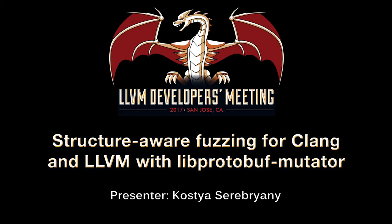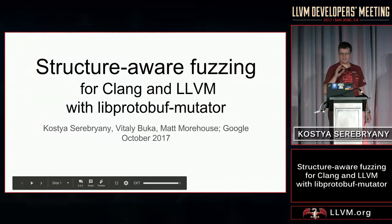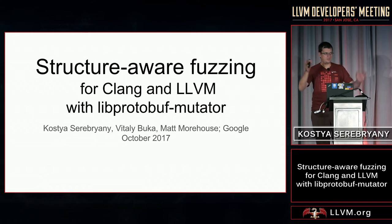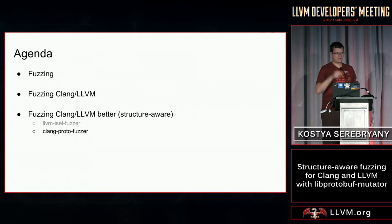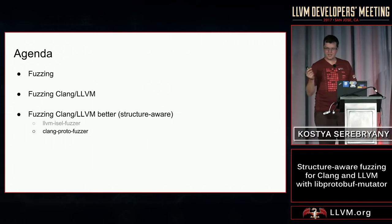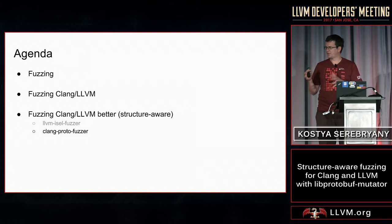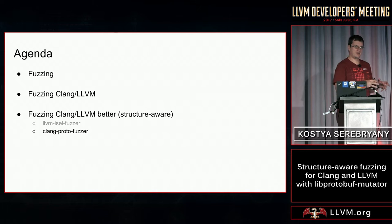Good afternoon, and thank you for coming for the last session for today. The session will be about fuzzing. In particular, I will talk about fuzzing Clang and LLVM itself using a library called libprotobufmutator. This is a joint work between myself and two more guys in my team, Vitaliy and Matt, who are present in this audience. I will talk about fuzzing in general, fuzzing components of Clang and LLVM, and I will concentrate on fuzzing them better.